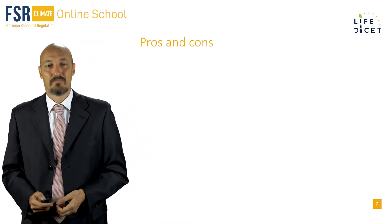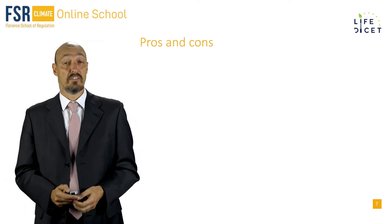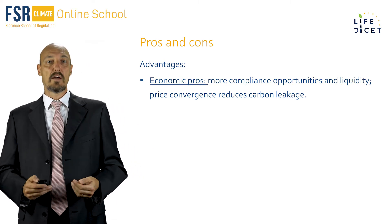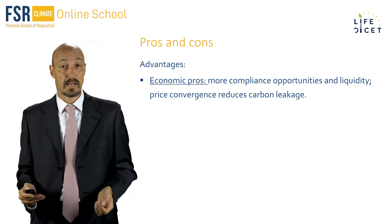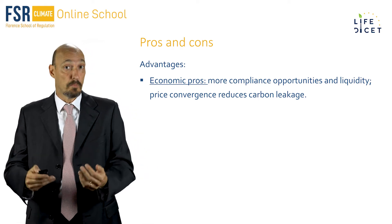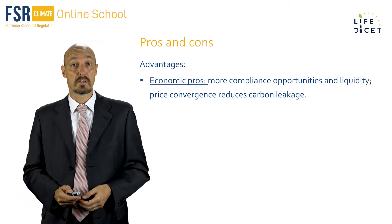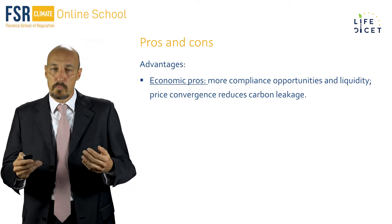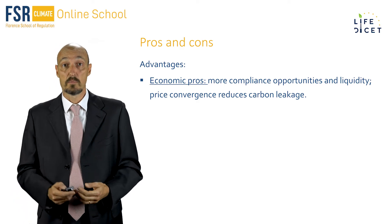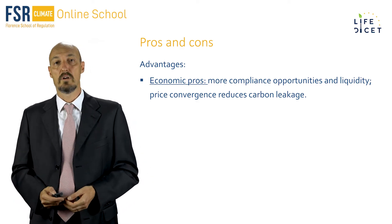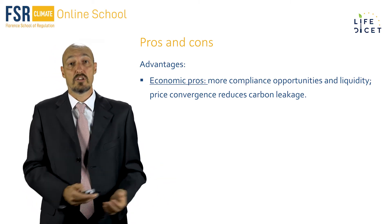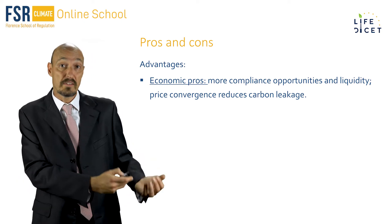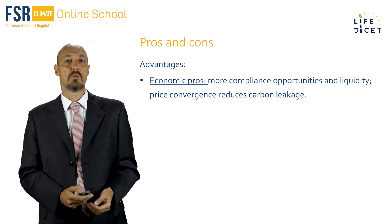As any marriage, linkage has advantages and disadvantages. First of all, the economic advantages derive from the fact that the larger market gives more and possibly cheaper compliance opportunities, and also increases the liquidity of the market. Moreover, the price convergence that comes along with the linking process reduces carbon leakage, namely the delocalization of production towards jurisdictions that have a laxer environmental regulation.